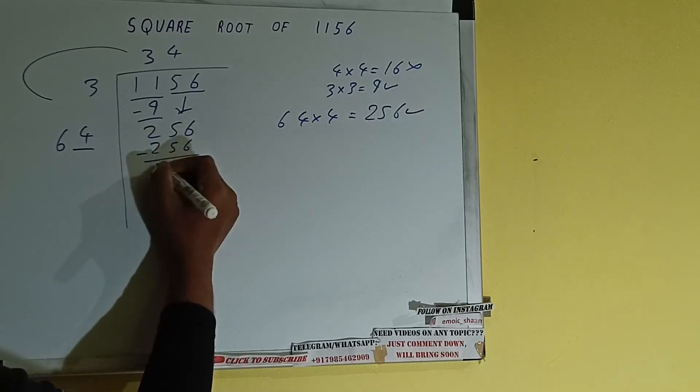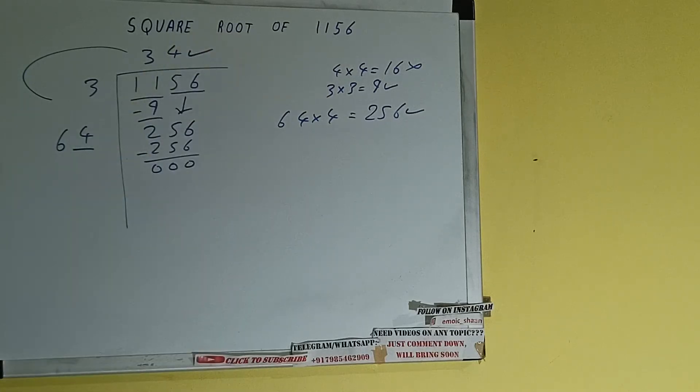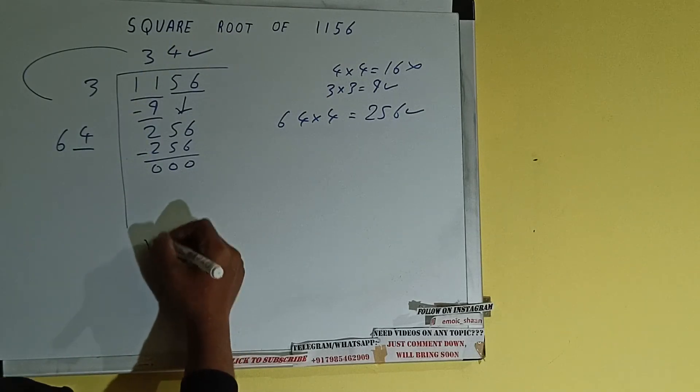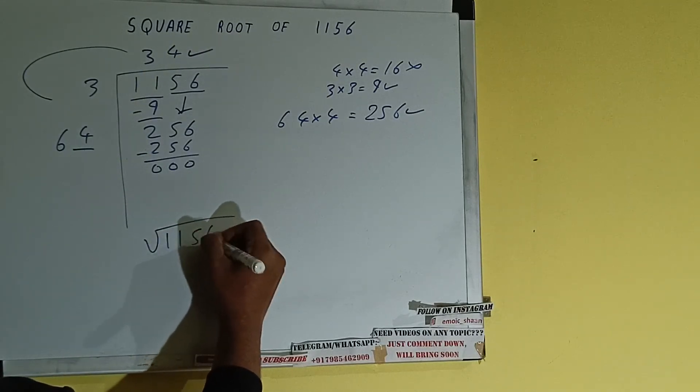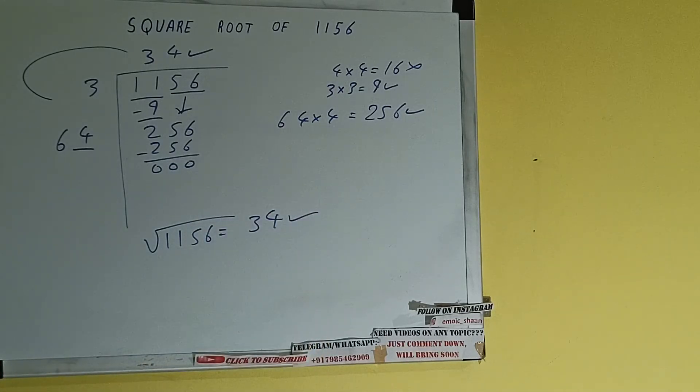256 subtract, 0 will be left. Once we get 0, whatever is in the question will be the answer. That is 34. So square root of 1156 will be 34. So this is all.